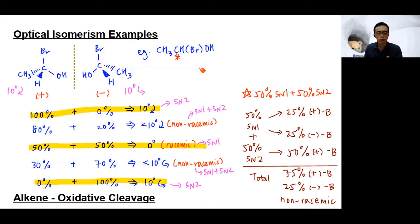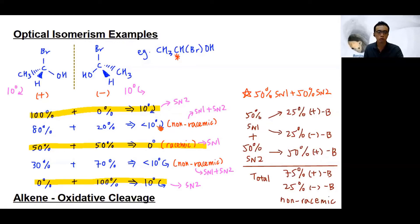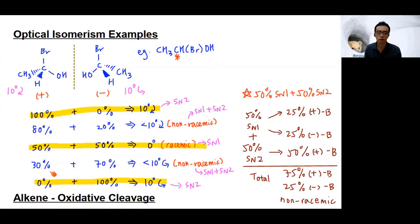If I have 80% plus and 20% minus isomer, the overall optical activity follows the majority — clockwise — because the plus isomer dominates. However, the magnitude will be less than the pure sample. If the pure sample rotates 10 degrees clockwise, a majority-plus mixture will rotate clockwise but less than 10 degrees. Conversely, 70% minus and 30% plus gives counter-clockwise rotation, also with a magnitude less than 10 degrees.